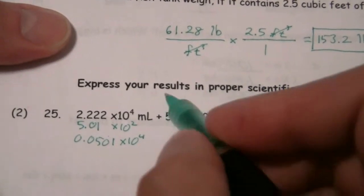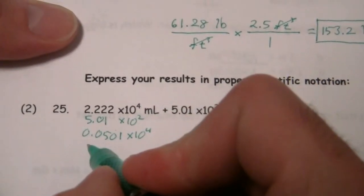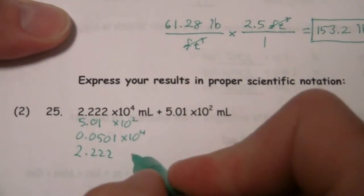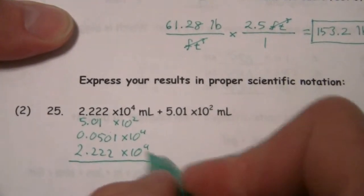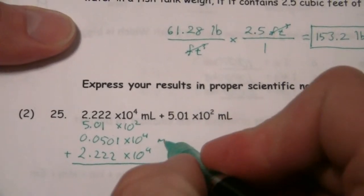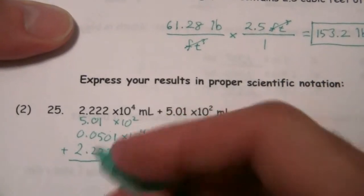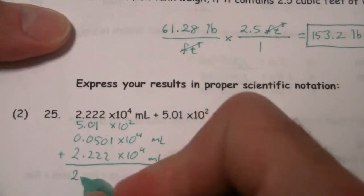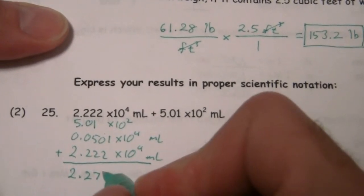Times 10 to the fourth. And we add that. I'm going to rewrite that just so it's a little bit clearer here: 2.222 times 10 to the fourth. So this is my addition. So I add this, and I'm going to get 2.2721